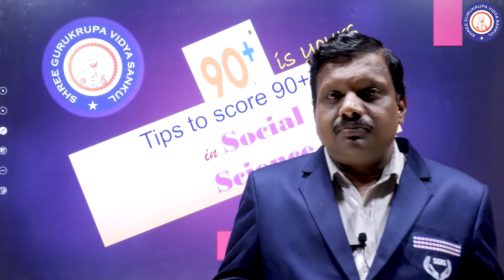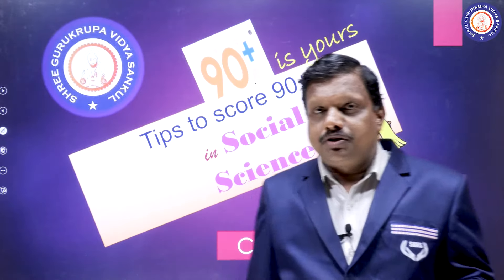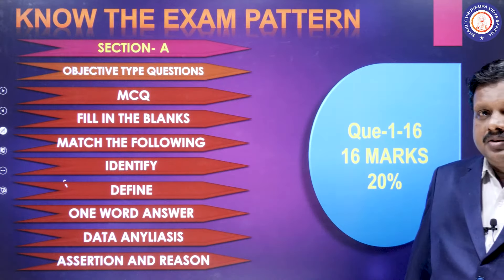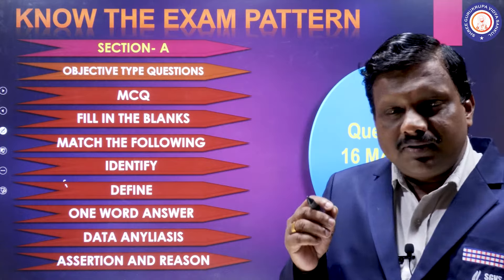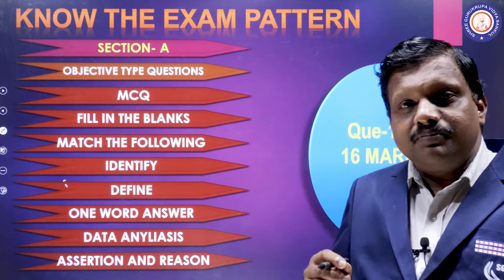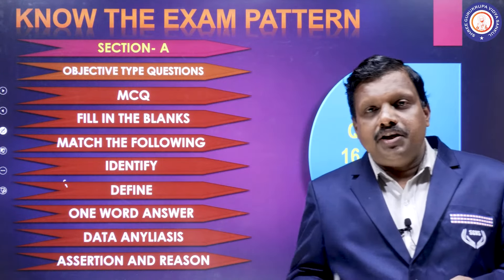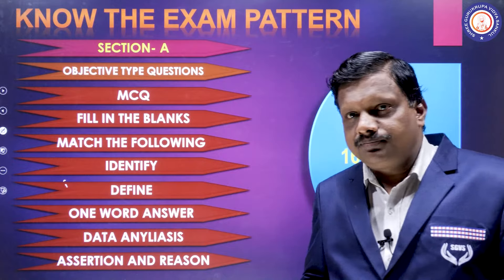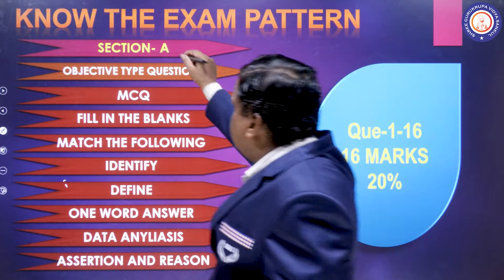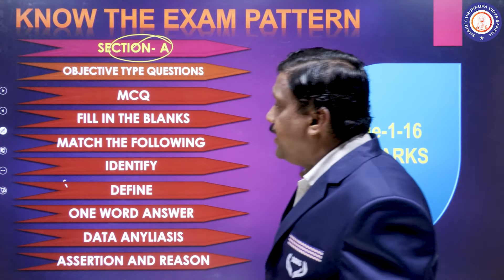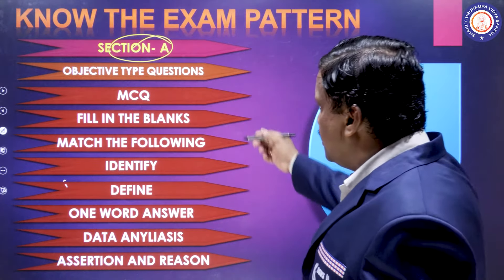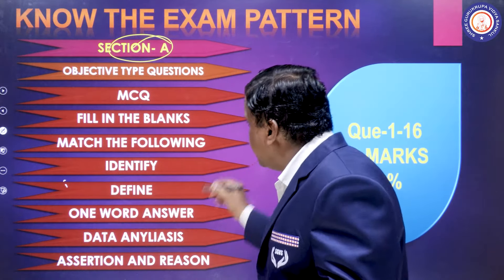Without wasting much time, let me come to the first point: Know the exam pattern. There are five sections in the social science question paper — Section A, Section B, Section C, Section D, and Section E. Section A is objective type questions, and it includes eight types of questions.